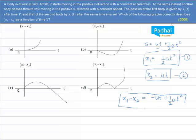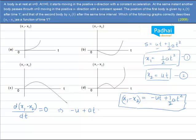This is more of a mathematics question where you have to draw the graph of the equation. What we can do is calculate d(x1 minus x2) by dt and put it equal to 0. This gives the point where slope is 0. So differentiating: minus u plus a into t equals 0. That means at time t equal to u by a, the slope will be 0 — it is 0 at only one time.